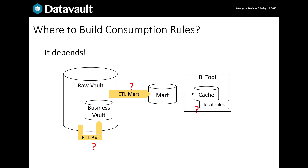There are three possible places to build consumption rules. You can run them in the raw vault, creating Business Vault tables. You can run them on the way out to the mart, or you can run them in the end user BI tool's cache. If processing is intensive and the results are used by more than one mart, you're best running the rule inside the vault to populate Business Vault tables. If processed data is used in one mart only, you can run those rules as you populate the mart. And finally, you might consider implementing local processing rules in the end user BI tool if the data is only used in one display.